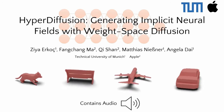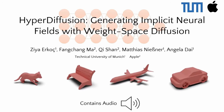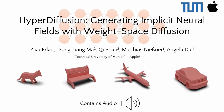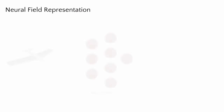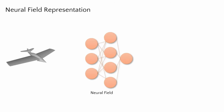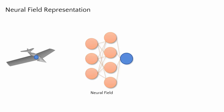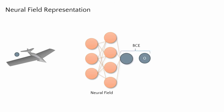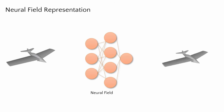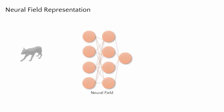We introduce HyperDiffusion, a new paradigm for generative modeling of neural fields that can generate 3D and 4D shapes in a unified diffusion setting. Neural fields are powerful representations for encoding high-dimensional data like 3D shapes. Coordinate locations are input to an MLP which characterizes an implicit surface, for instance outputting shape occupancy. This enables a high-fidelity surface representation from which a mesh can be extracted with marching cubes.